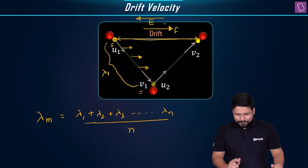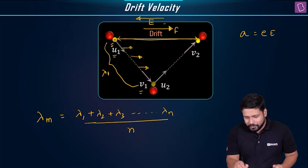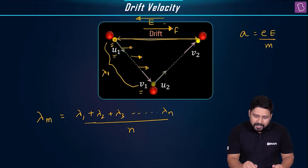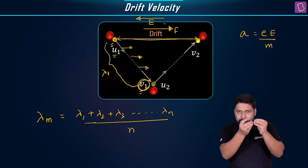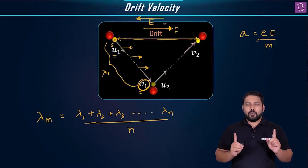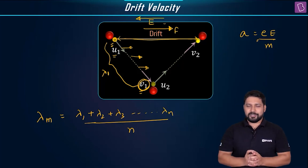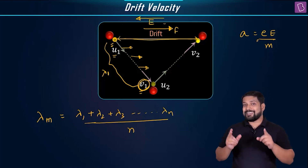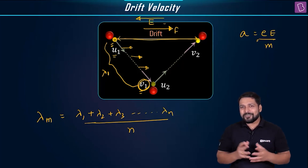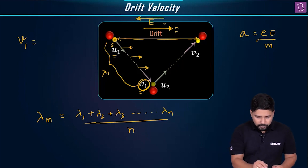If we say it is moving with thermal velocity U1 and the acceleration has magnitude eE/m, what can we write about V1? Within this free path, can I assume the motion to be a straight line? Yes. Is the acceleration constant? The electric field is constant, the charge on the electron is constant, the mass of an electron is constant — so the acceleration is also constant. Therefore I am free to use the equations of kinematics. So V1 will be equal to U1 plus a times t.